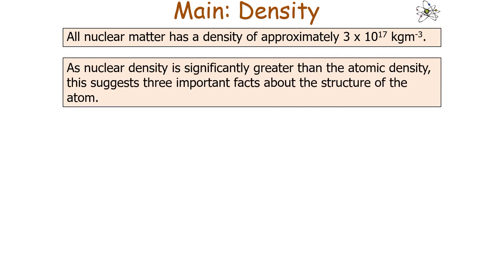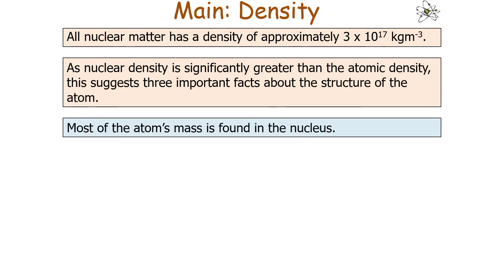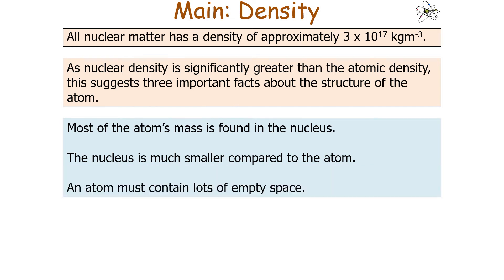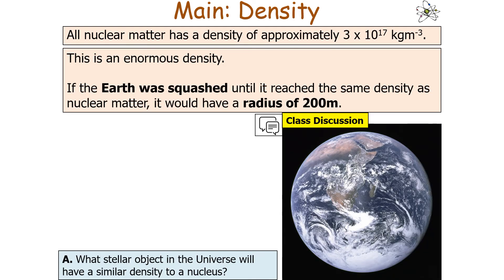Since nuclear density is significantly greater than atomic density, this suggests three important facts about atomic structure: firstly, most of the atom's mass is found in the nucleus; secondly, the nucleus is much smaller compared to the atom; and thirdly, an atom must contain lots of empty space. If the Earth were squashed until it reached the same density as nuclear matter, it would have a radius of about 200 metres.